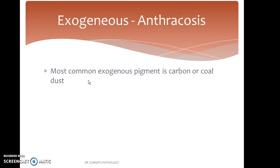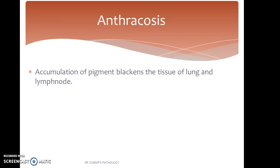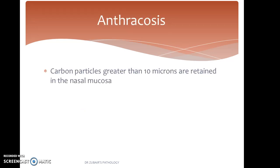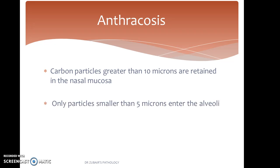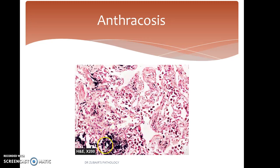Coming to exogenous pigments: anthracosis. The most common exogenous pigment is carbon or coal dust. When inhaled, it is picked up by macrophages within alveoli and transported through lymphatic channels to the regional lymph nodes. Those living in cities are exposed to carbon, which accumulates and blackens the lungs and lymph nodes. In coal workers, aggregates of carbon particles may cause coal workers' pneumoconiosis, which is an occupational hazard. Carbon particles greater than 10 microns are retained in the nasal mucosa; only the finer particles actually enter the alveoli. Here we see the alveoli where carbon particles have entered and macrophages are engulfing them, subsequently leading to pneumoconiosis. The actual image shows the pigment clearly.